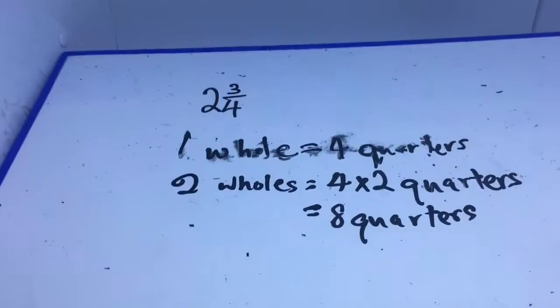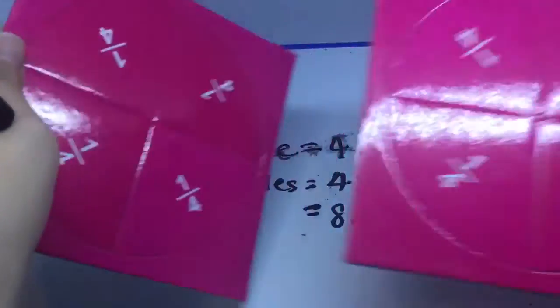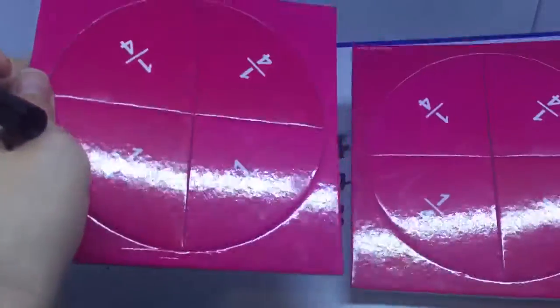Okay? So if I have this over here, I have two wholes. This is four quarters. Another four quarters, so four times two, eight quarters in total.